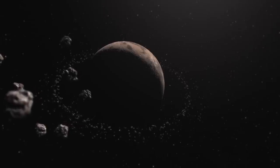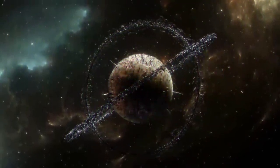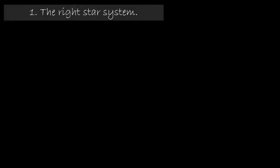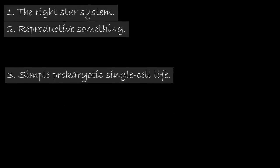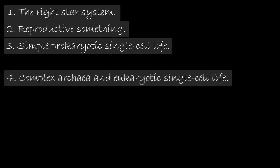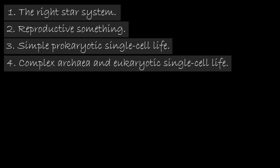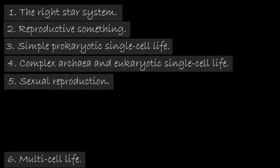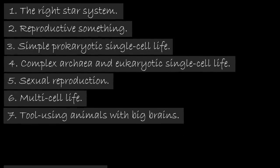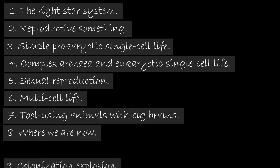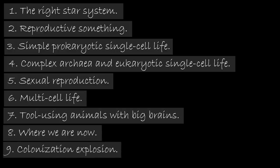Dr. Robin Hanson, a well-known futurist at George Mason University, published the nine steps he believes are required to get from a suitable planet to an interstellar civilization, which are: the right star system, reproductive something, simple prokaryotic single cell life, complex archaea and eukaryotic single cell life, sexual reproduction, multi-cell life, tool using animals with big brains where we are now, and colonization explosion. These nine steps to a colonization explosion are the Great Filter.